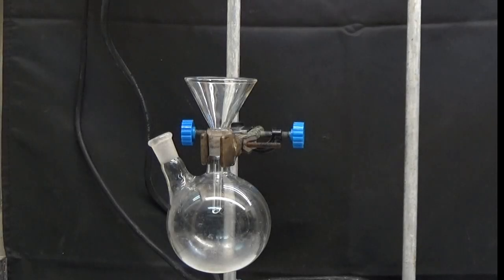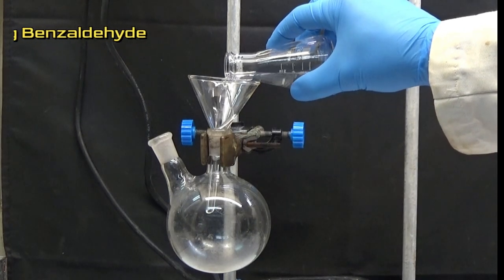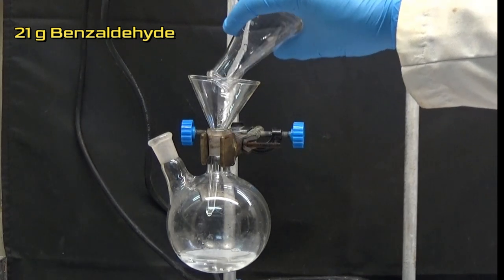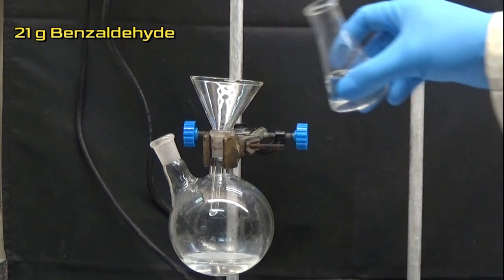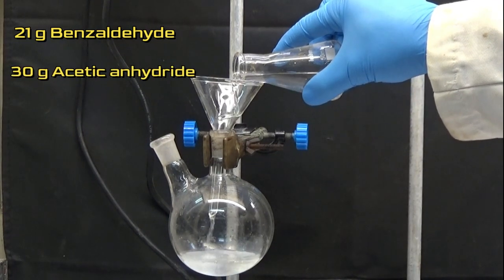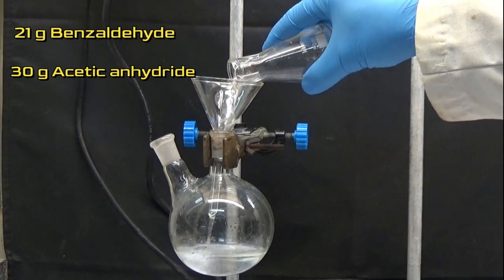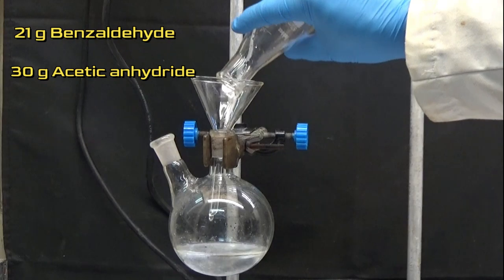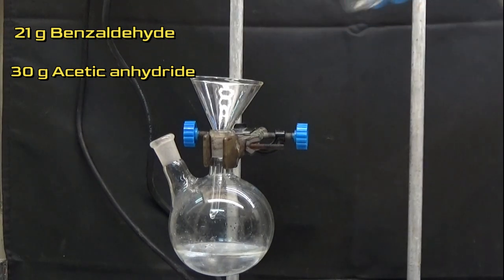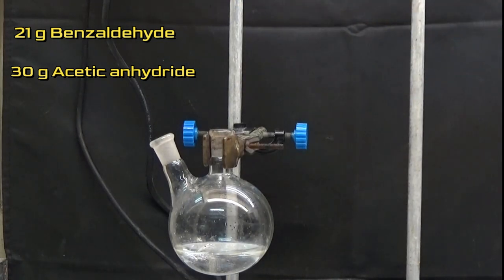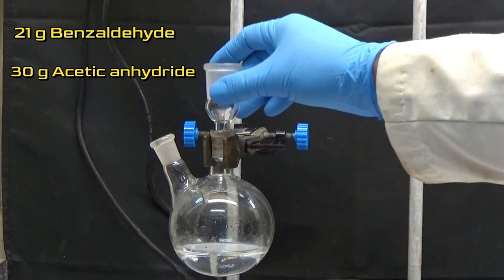To obtain cinnamic acid, mix in a 250 milliliter flask with two necks 21 grams of benzaldehyde and 30 grams of acetic anhydride.